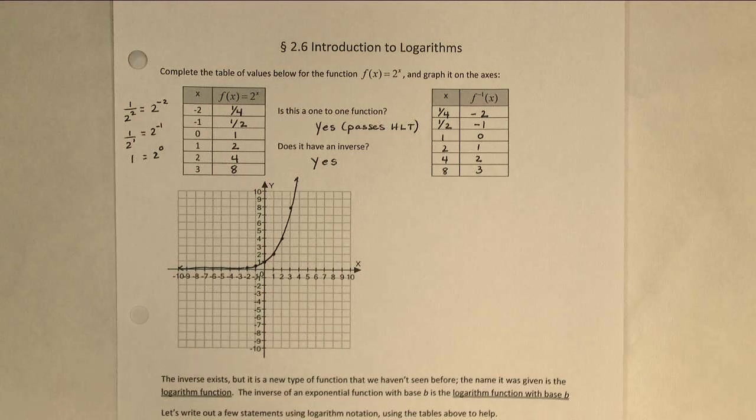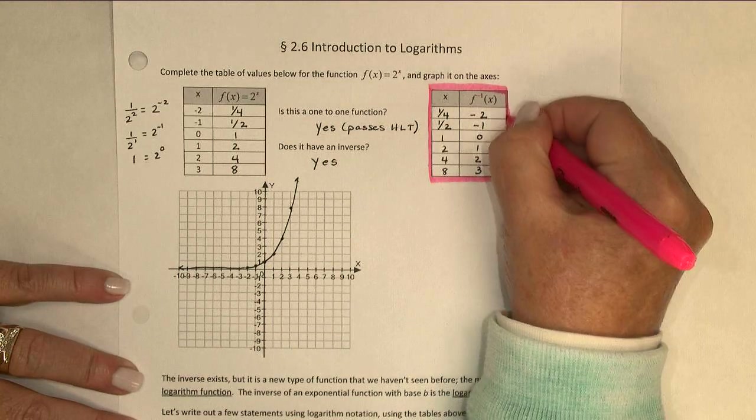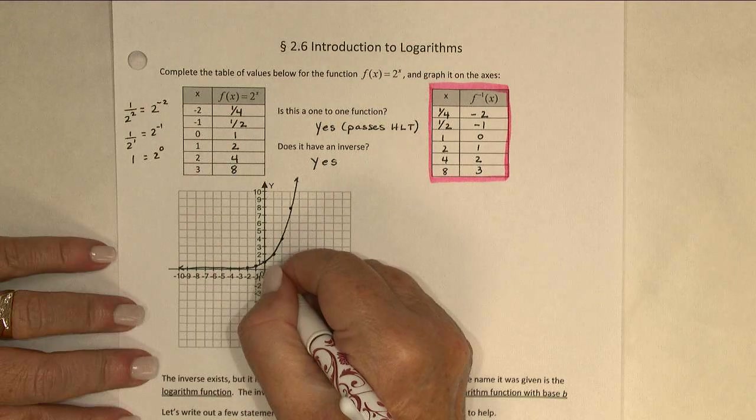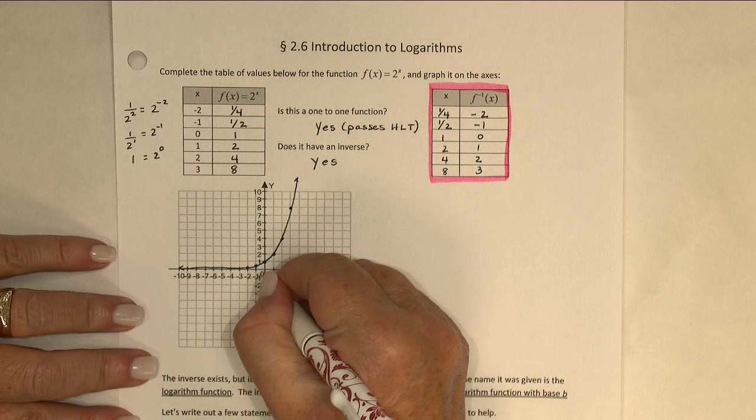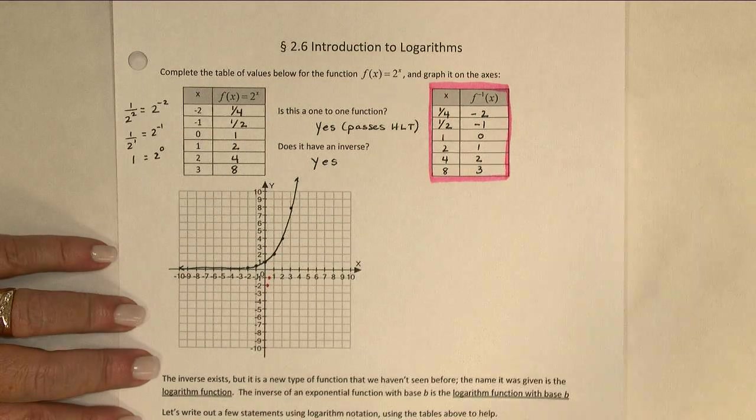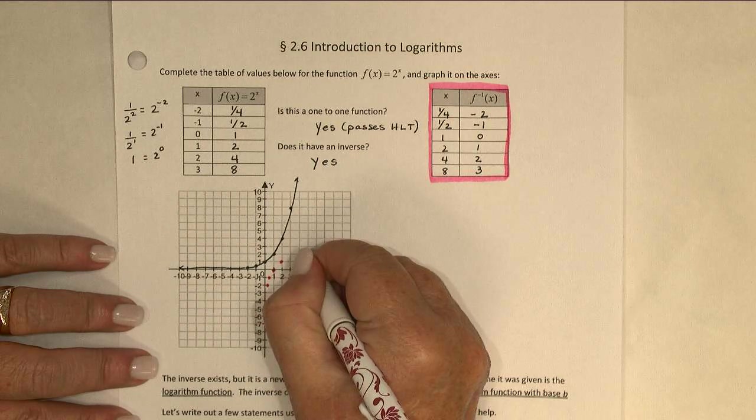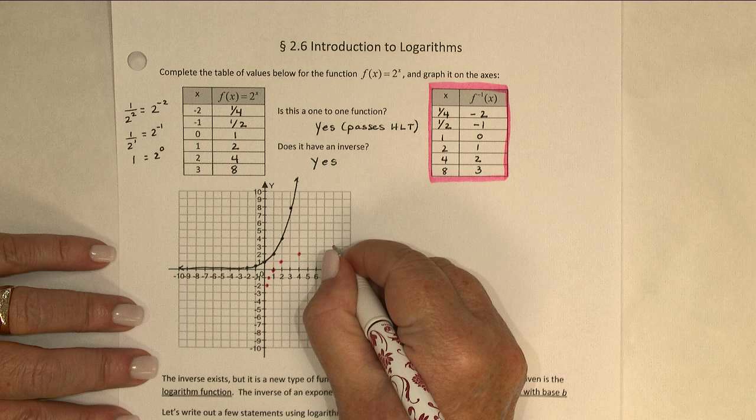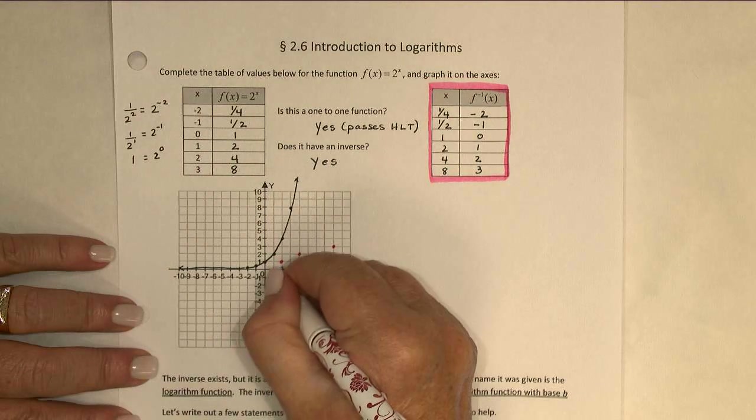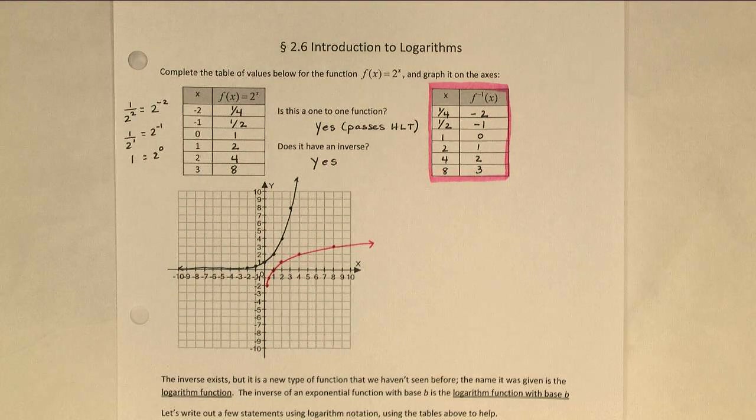On these same axes, I would now like to graph the inverse function. I'll start with the points in the table that we made. So, one-fourth negative two, one-half negative one, and so on. I can connect these points using a nice smooth curve and begin to see the graph of the inverse function.